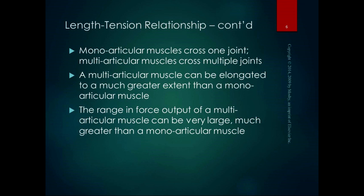Monoarticular muscles are muscles that cross one joint. Multiarticular muscles are ones that cross multiple joints, and a multiarticular muscle can be elongated to a much greater extent than a monoarticular muscle. So the range and force output of a multiarticular muscle can be very large. When we look at a lot of the big muscles in our body that do major functional movements — quadriceps, hamstrings, gastrocnemius, biceps, triceps — many of these are multiarticular muscles crossing multiple joints, giving us a larger range in force output.